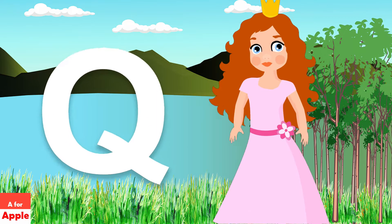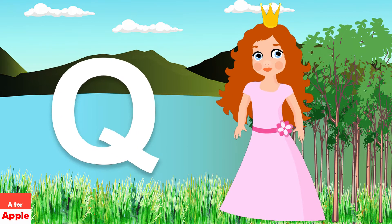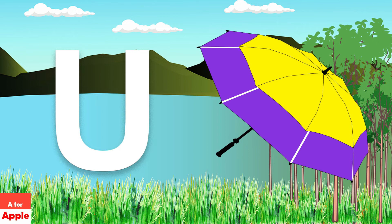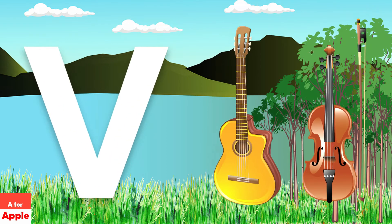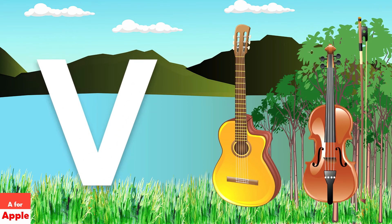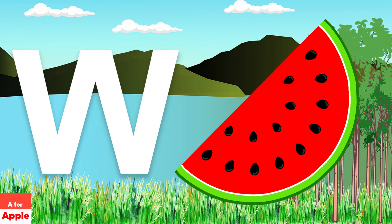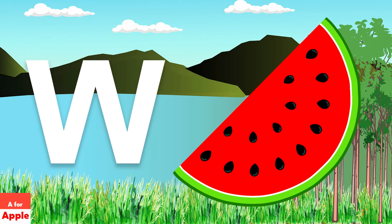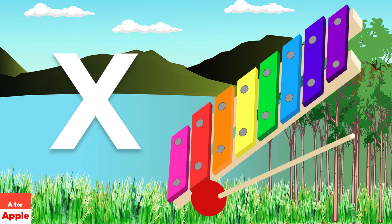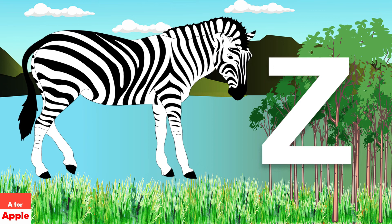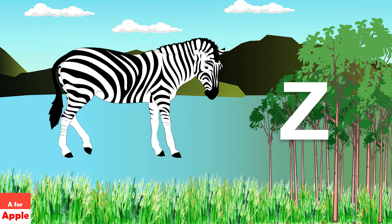I for ice cream. J for jug. K for kite. L for lemon. M for mango. N for nest. O for orange. P for pencil. Q for queen.